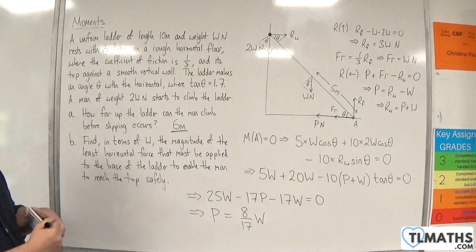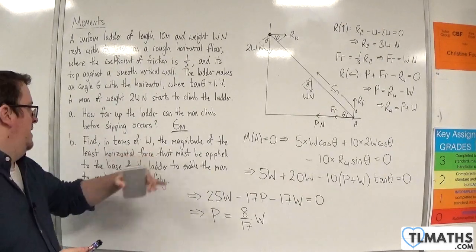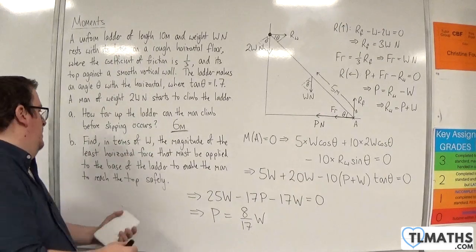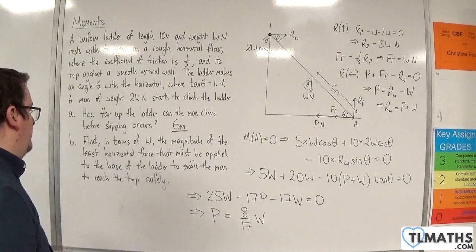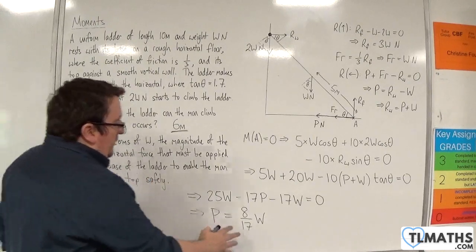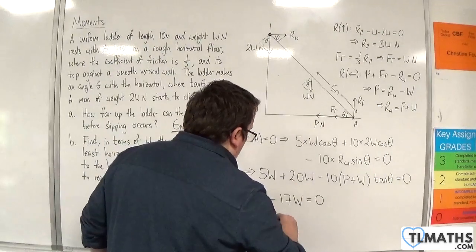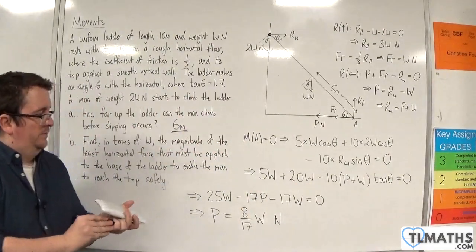The magnitude of the least horizontal force that must be applied to the base of the ladder to enable the man to reach the top safely is 8/17 W Newtons.